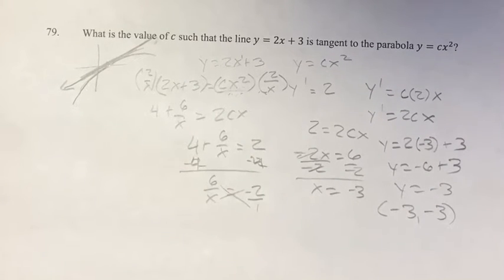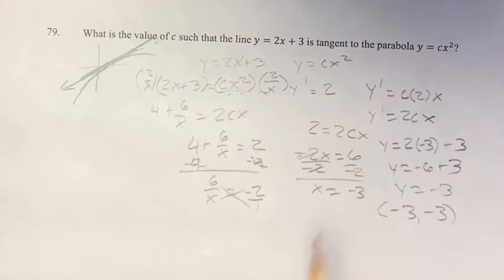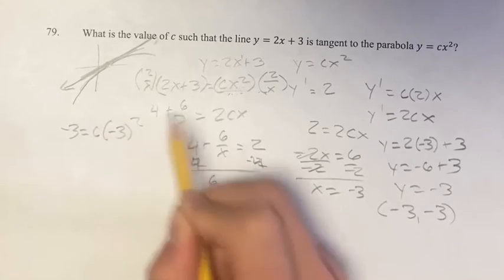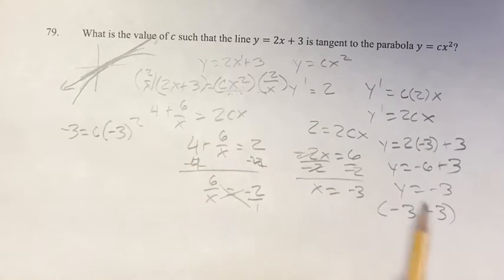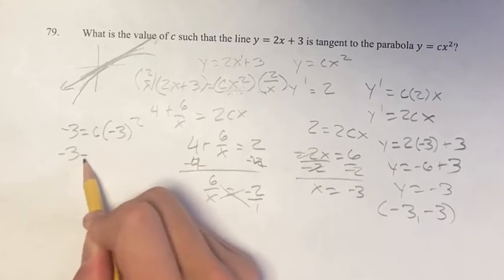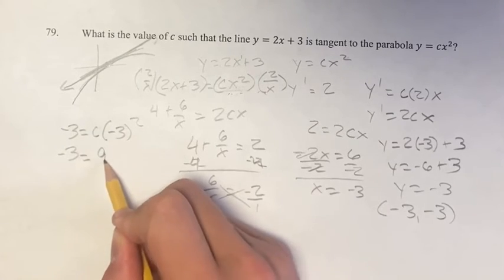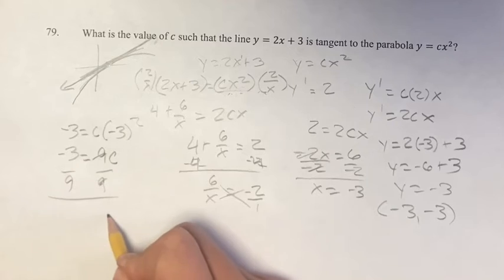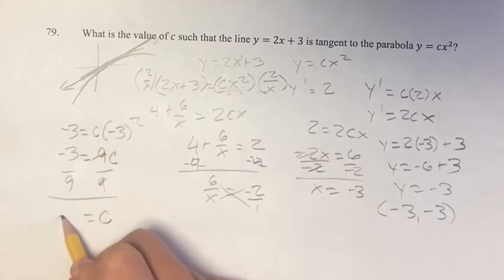So we want to find c, and we know that the point (-3, -3) is on this curve. So we plug in -3 for x and -3 for y, we can solve for c. You get -3 = c times (-3)². Solving for c, (-3)² is 9, so -3 = 9c. Divide both sides by 9. You get c = -3/9, which is -1/3.